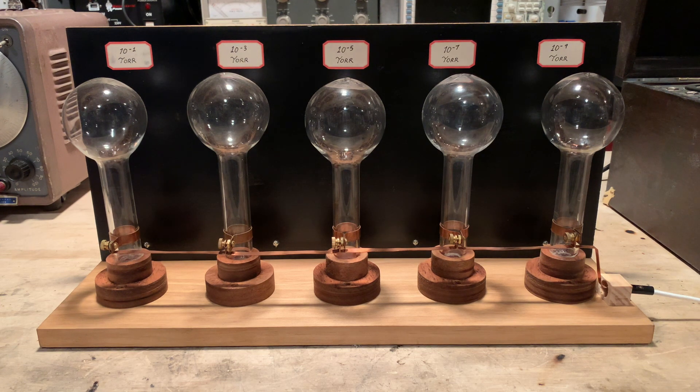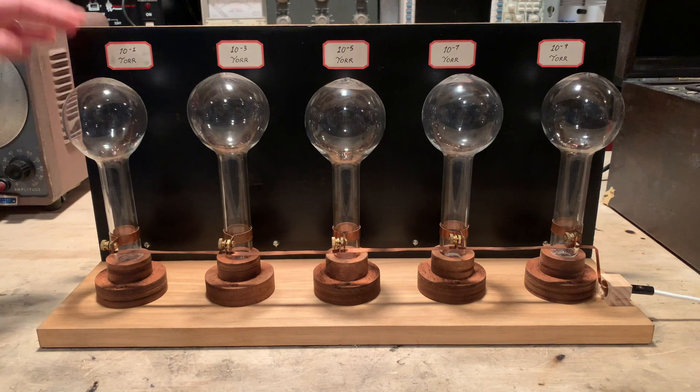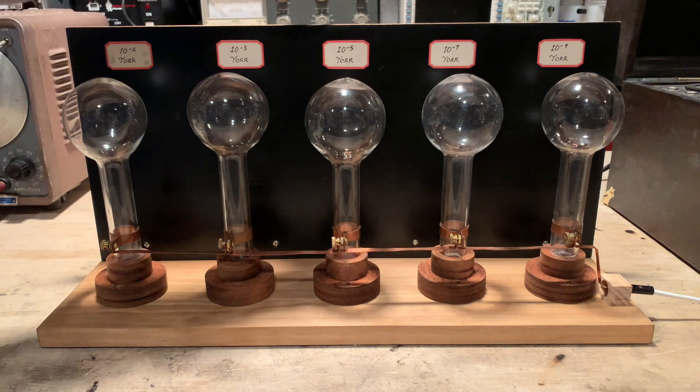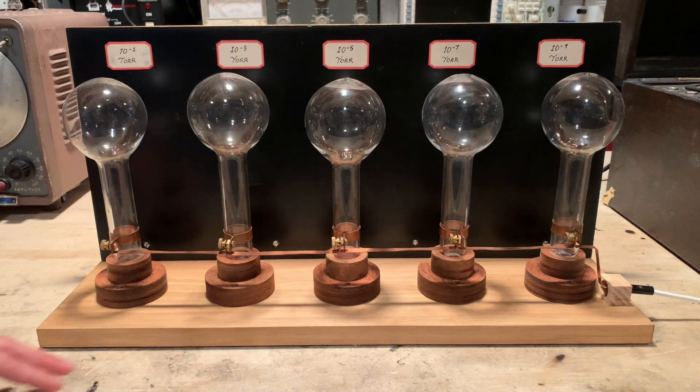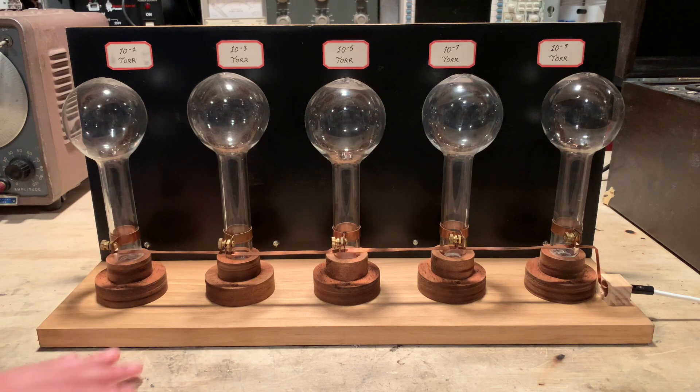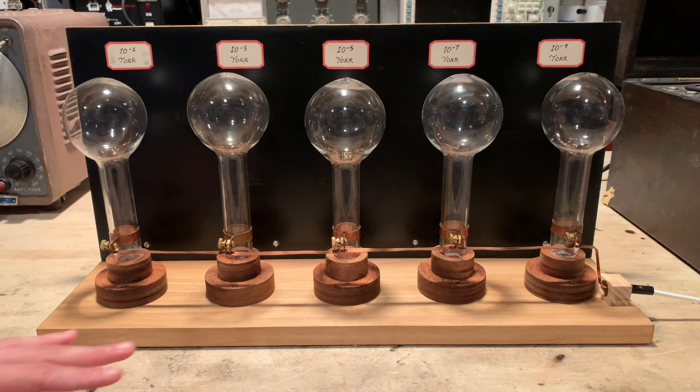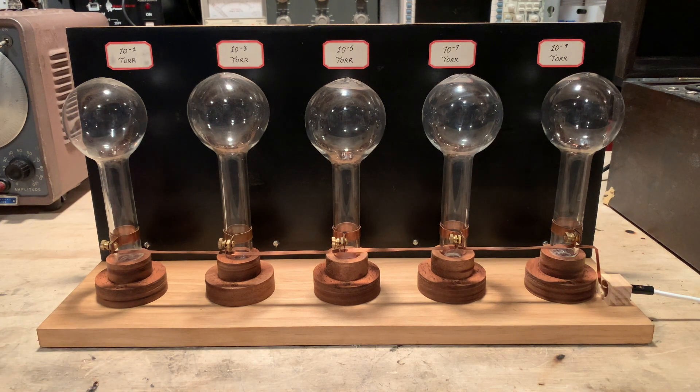It consists of five individual glass envelopes, each lamp evacuated to a specific degree of vacuum, from left to right, very poor vacuum all the way to very high vacuum, 10 to the minus 1 torr all the way up to 10 to the minus 9 torr.